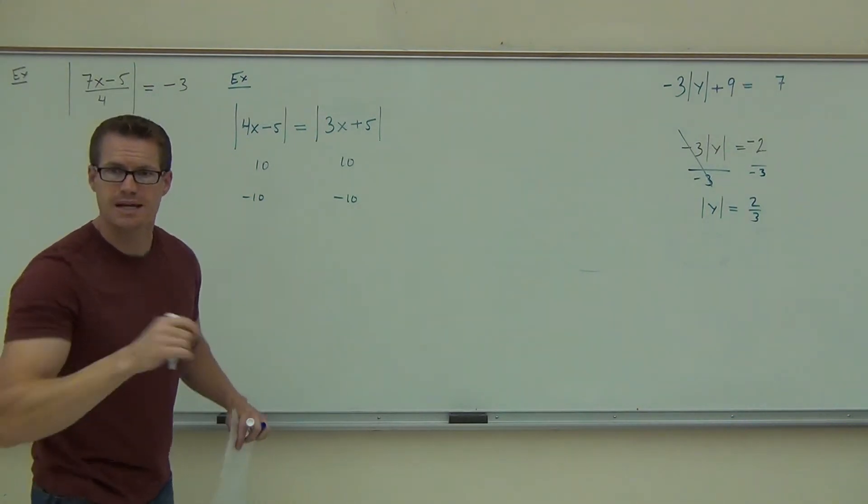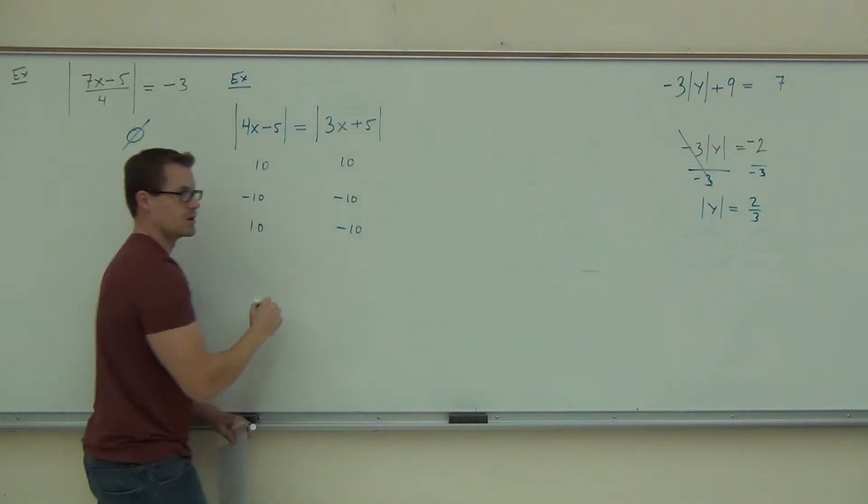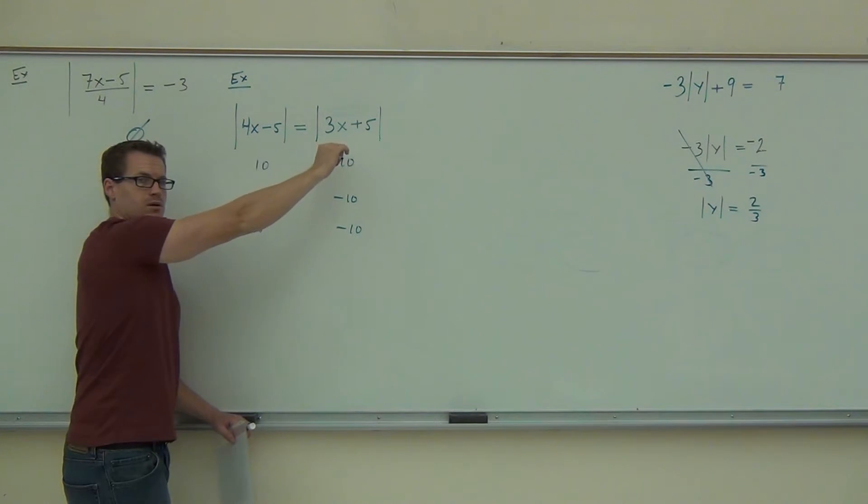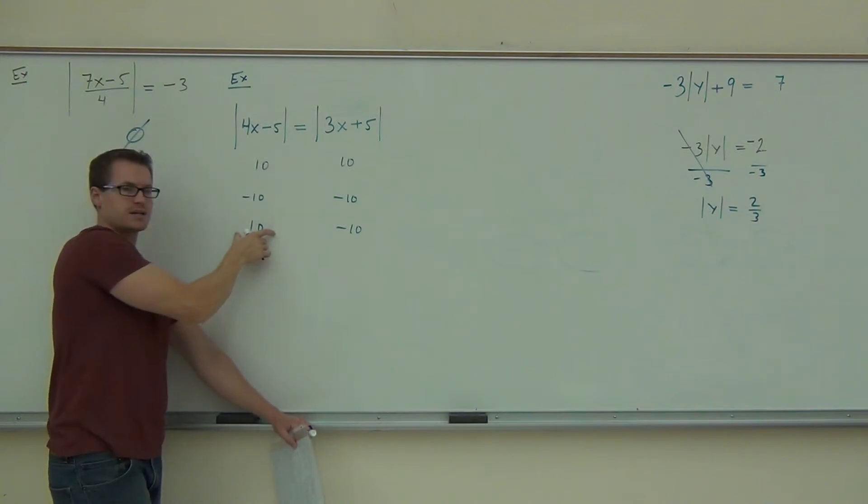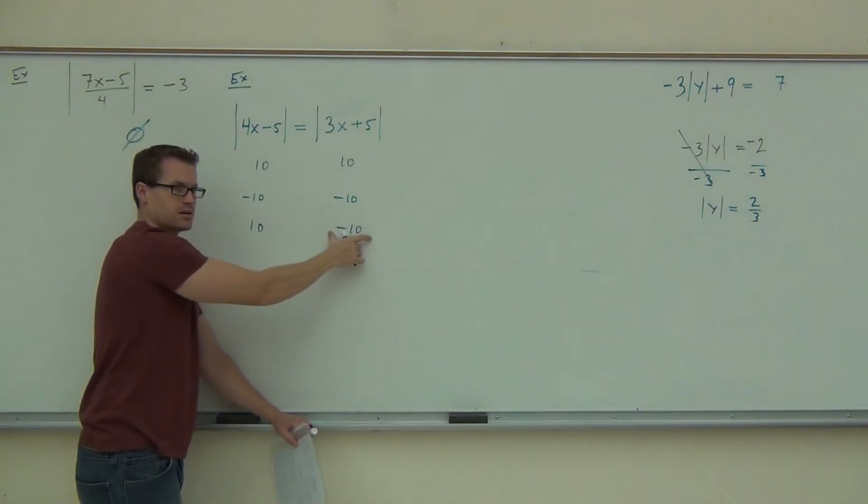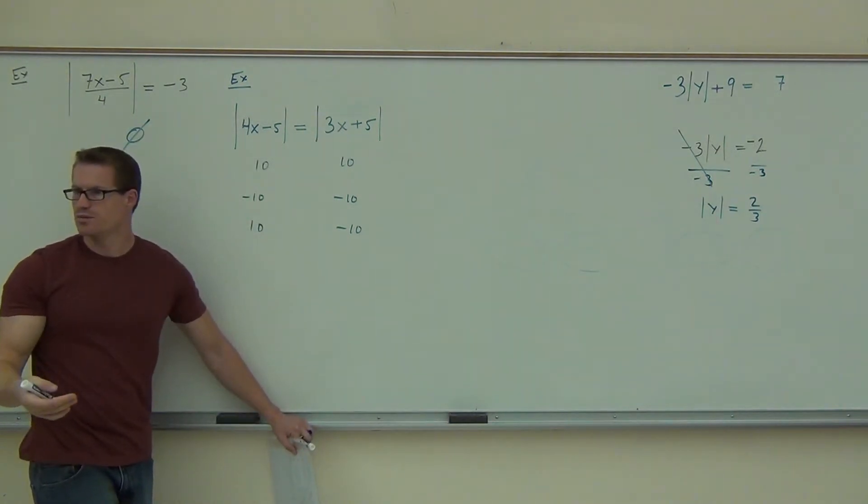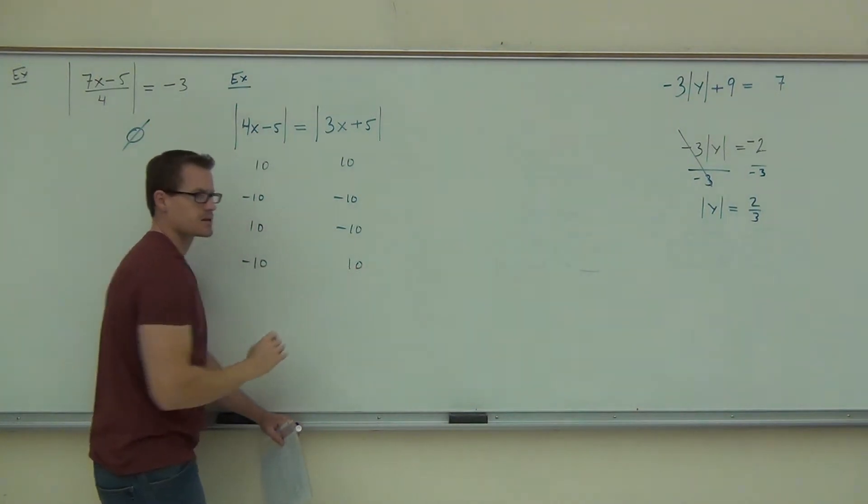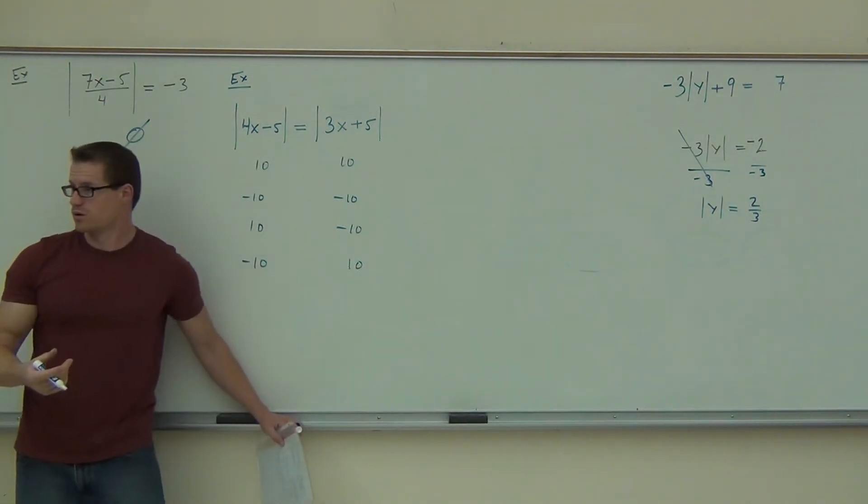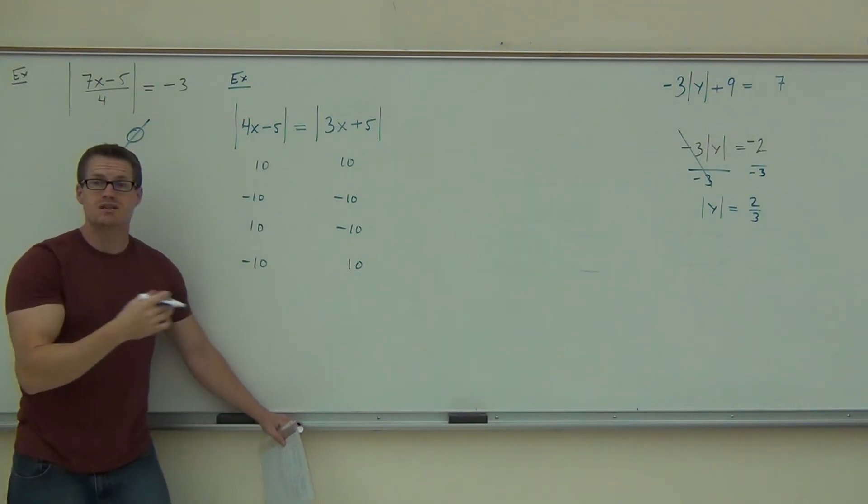Say that again. 10 equals negative 10. So if this was 10 and this was negative 10, would these still be equal? I need you to kind of get this if you're going to understand the idea here. Are these equal or not? What's the absolute value of 10? What's the absolute value of negative 10? So when I plug them into absolute values, they both become positive, but they're still equal. There's one more case.